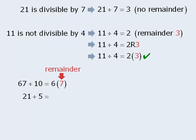When we divide 21 by 5, we get 4 with remainder 1. And finally, when we divide 45 by 9, we get 5 with remainder 0. This by the way means that 45 is divisible by 9.